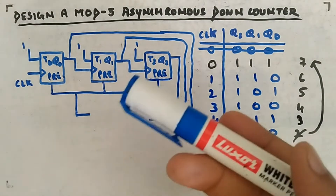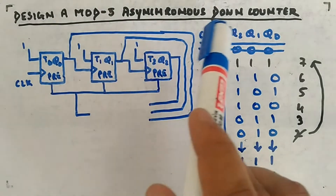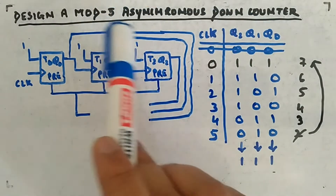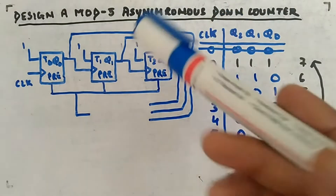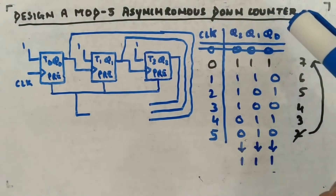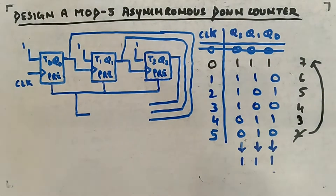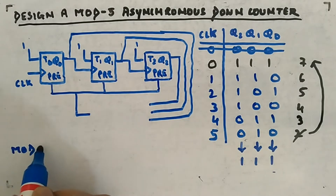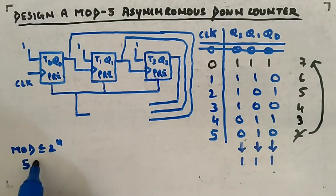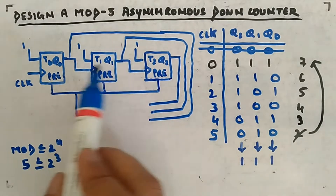Let me give you an example where you can use preset as clearing the flip-flop. Design a mod-5 asynchronous down counter — this time a down counter — and you will see the use of preset as an asynchronous input. We are aware that mod-5 needs three bits. Mod value must be less than or equal to 2 to the power n, so with mod 5, we need n=3, meaning three flip-flops are needed.